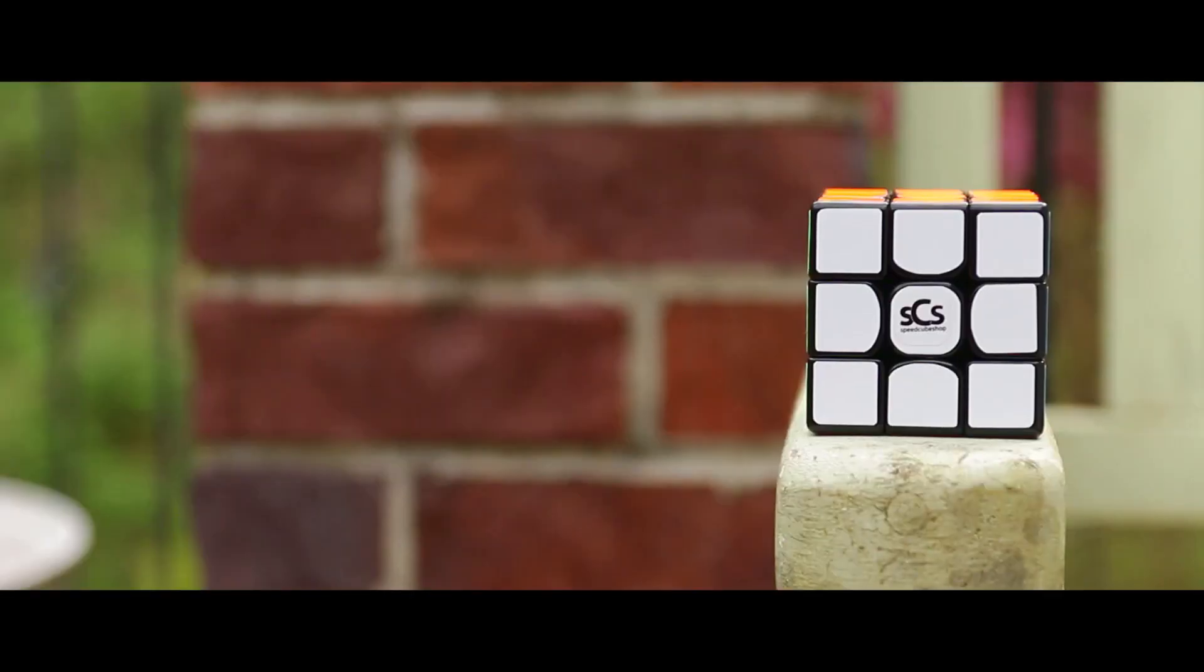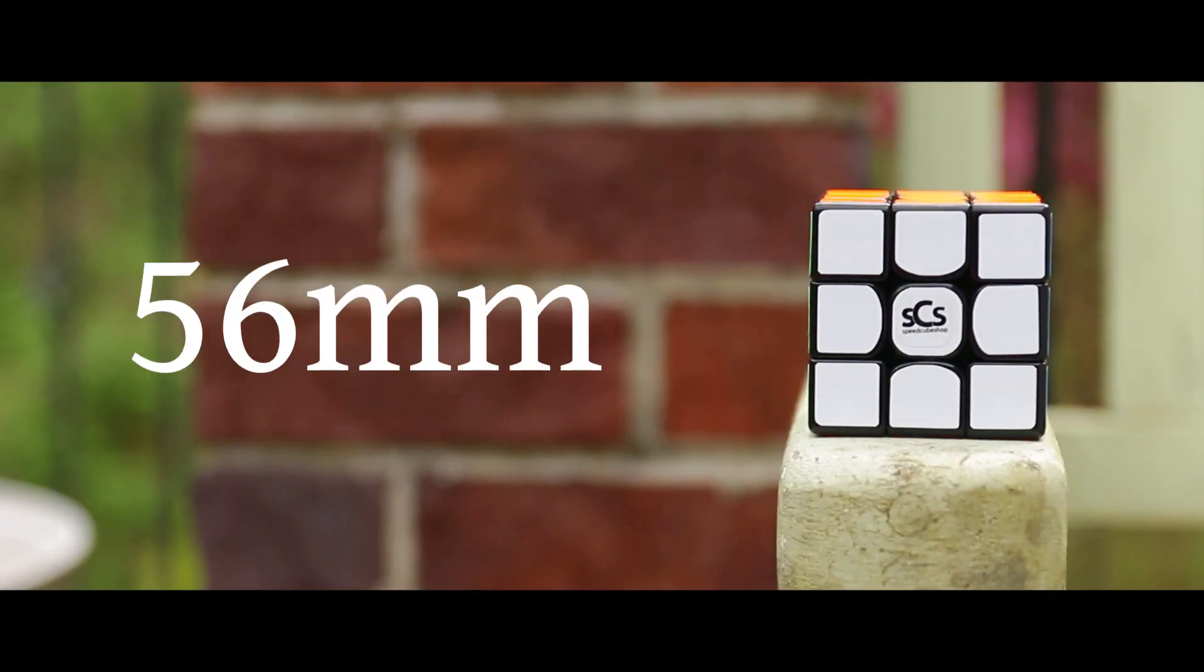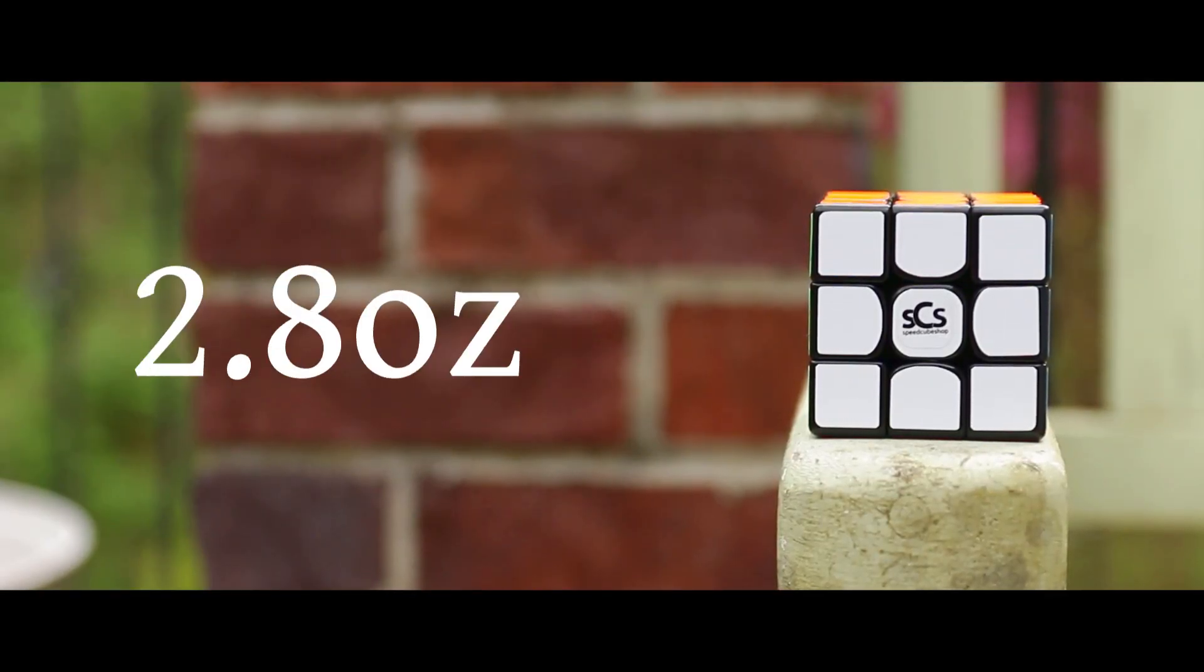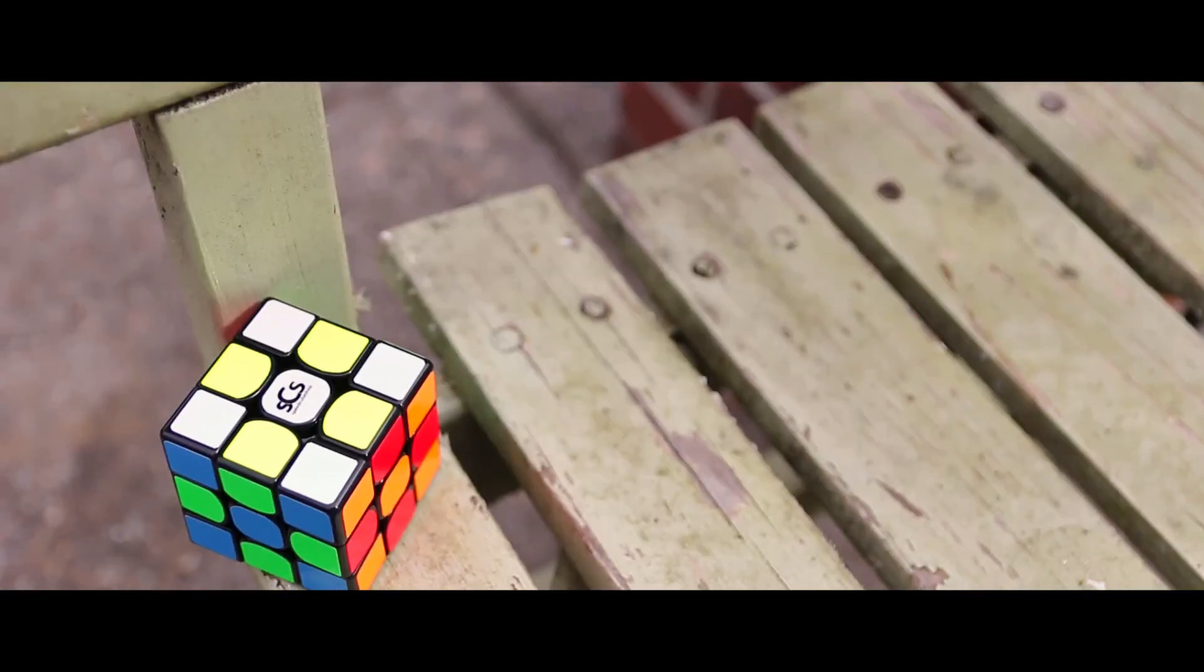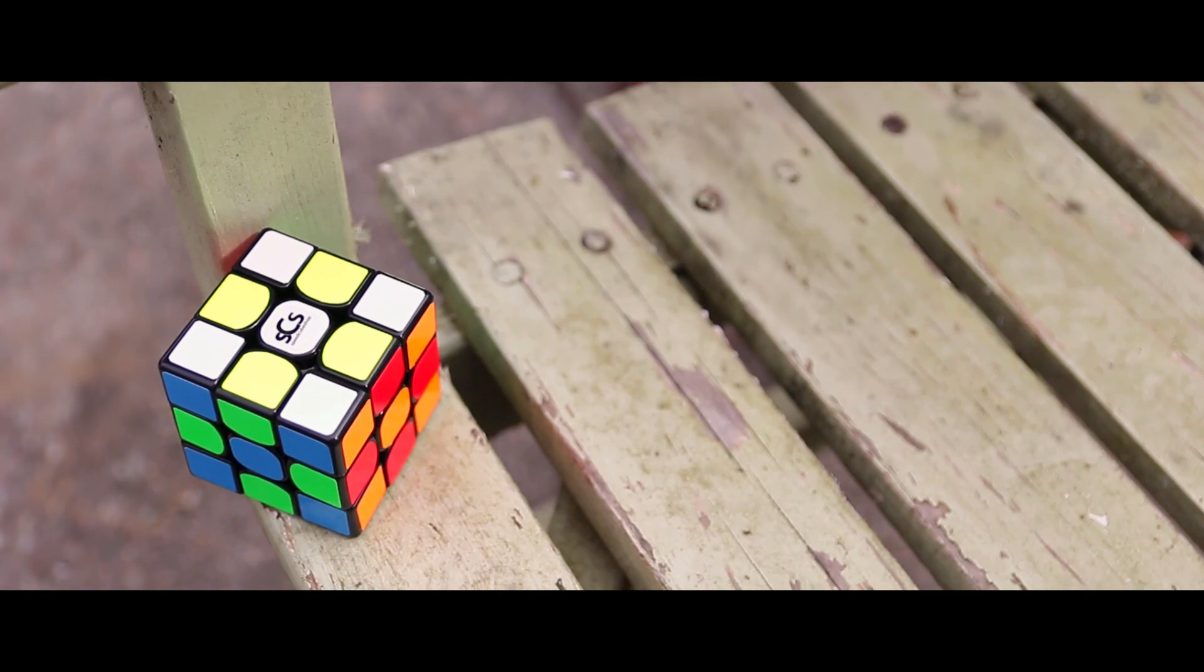Let's find out! The MF3RS2 is a 56mm 3x3 weighing 2.8 ounces, which is the same weight as the GTS2. Even though it has some heft, it isn't too heavy, and it doesn't feel cheap for its price.